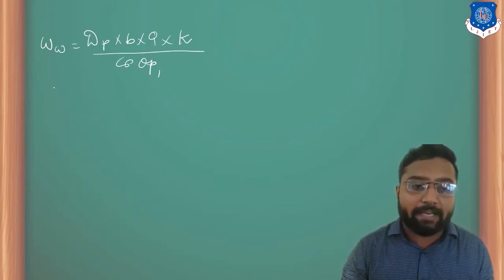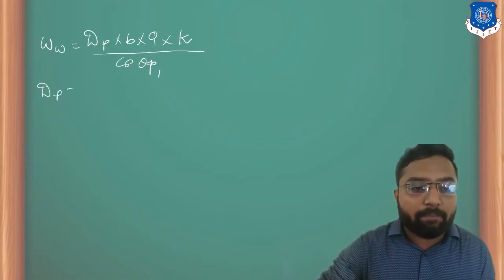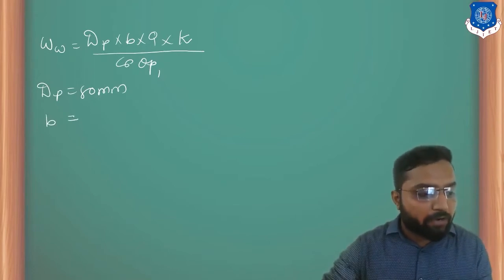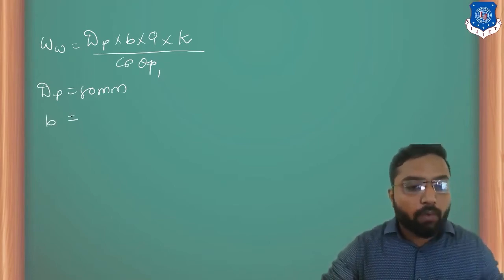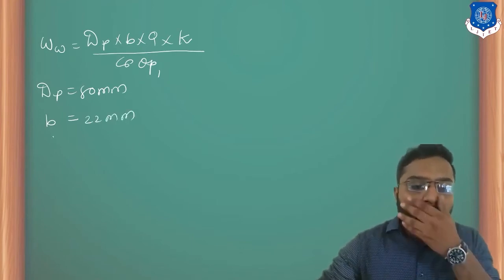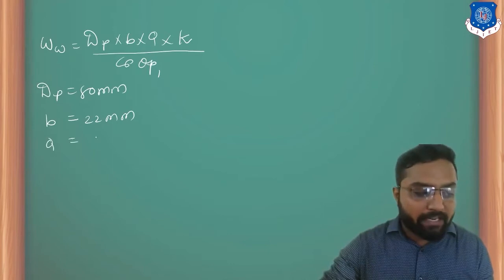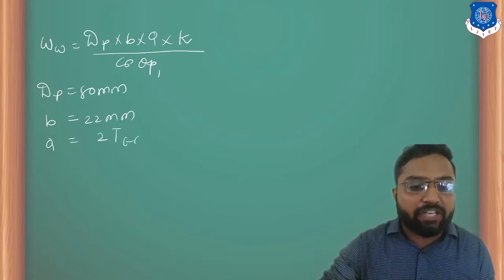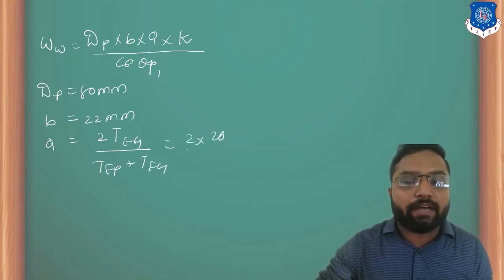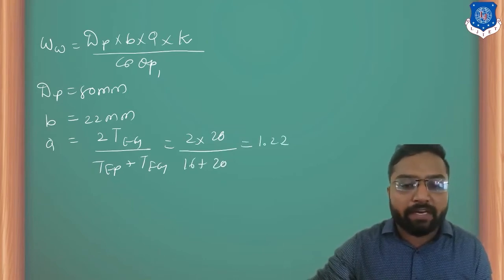B we found out depending on our module: 12 × module = 12 × 5 = 60, but the face width B is 22 mm which we found previously. What is Q? Q is the ratio of number of teeth: 2 × Tg / (Tp + Tg) = 2 × 20 / (16 + 20) = 1.22.